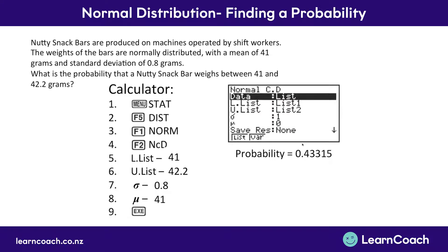Remember this process: STAT, DIST, NORM. If you're trying to find a probability, press NCD. Then list your factors, press execute, and the calculator does all the calculating for you and tells you your probability. The probability won't be the only thing that comes up, but you can ignore everything else — just read the probability.